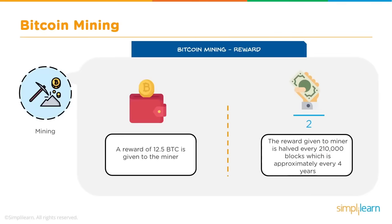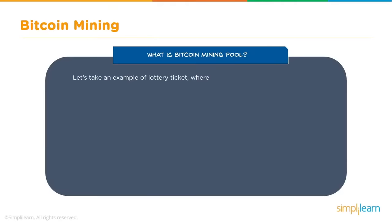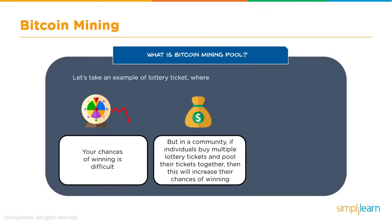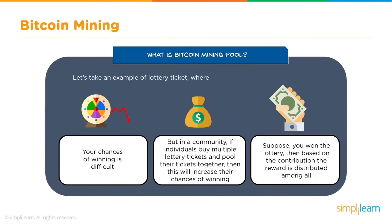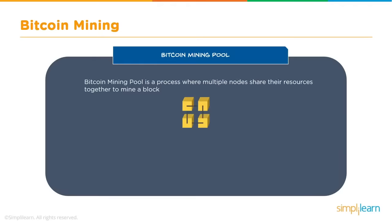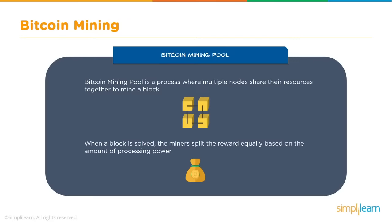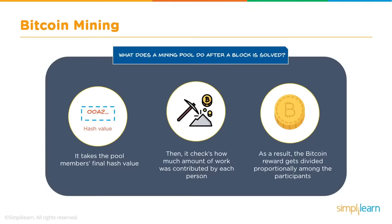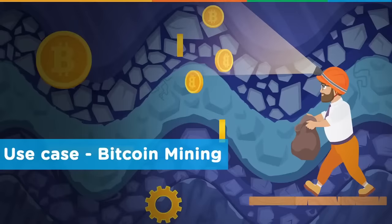Consider a lottery ticket where winning is difficult individually. A Bitcoin mining pool works similarly — multiple nodes share their resources together to mine a block. When a block is solved, miners split the reward based on the amount of processing power they invested. If community members pool their tickets together, their probability of winning increases. So in Bitcoin mining pool, pool members generate a final hash value, and once a block is solved the Bitcoin reward gets distributed proportionally among participants based on their contribution.